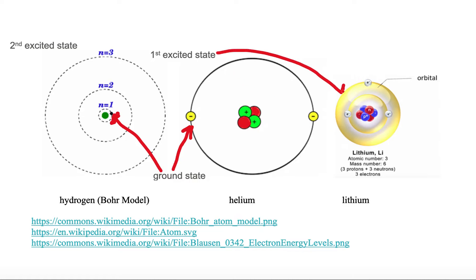That next level up above ground is called the first excited state. When n equals one, that's the ground state. When n equals two, it's the first excited state. When n equals three, that's the second excited state, and so on. We call these the Bohr models because electrons don't really travel in nice circular orbits — electrons travel like swarms of bees around the nucleus. So we use a cartoon model as a pictorial representation of where the electrons could be located.